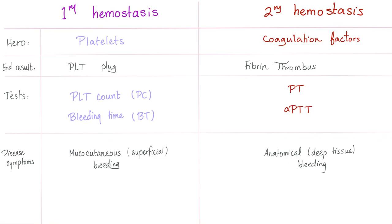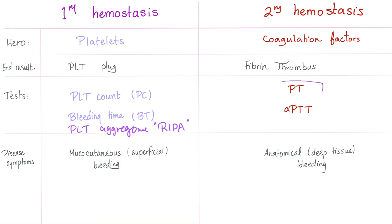Primary hemostasis versus secondary hemostasis: in primary hemostasis, the hero is platelets; in secondary, coagulation factors. The end result of primary hemostasis is a platelet plug, while secondary hemostasis produces a strong fibrin thrombus trapping red blood cells. Tests include platelet count, bleeding time, and platelet aggregometry — including the famous ristocetin-induced platelet aggregation. For secondary hemostasis, we have the PT and PTT.